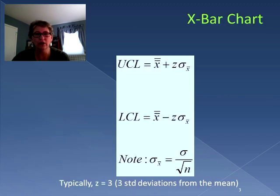When we look at the X-bar chart, we're going to create an upper control limit by using the mean plus three standard deviations above the mean, and for the lower control limit it's going to be the mean minus three standard deviations. Now you see I have z here because sometimes people use a number other than three standard deviations, although three is normal for this kind of chart.